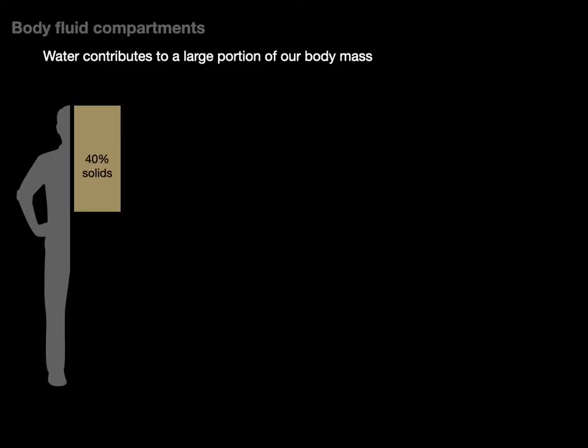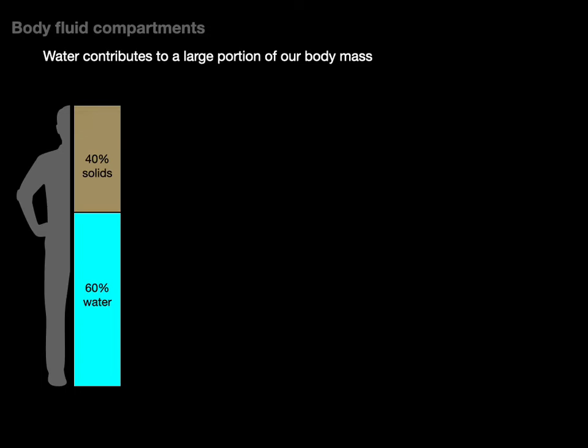If you take a look at this picture, 40% of our body is solids, things like muscles and bones, and 60% is water. Now this varies based on the size of the individual, but let's stick with this because it makes the math easiest. 60% of our body is composed of water.